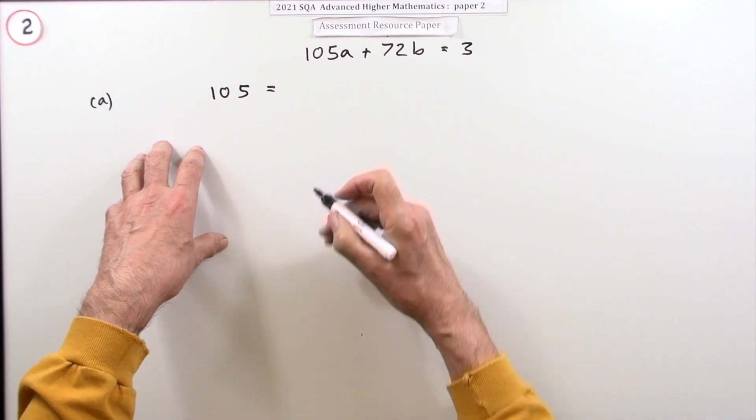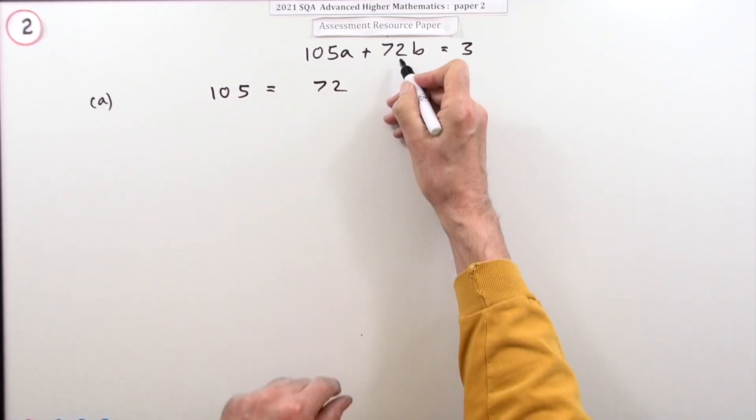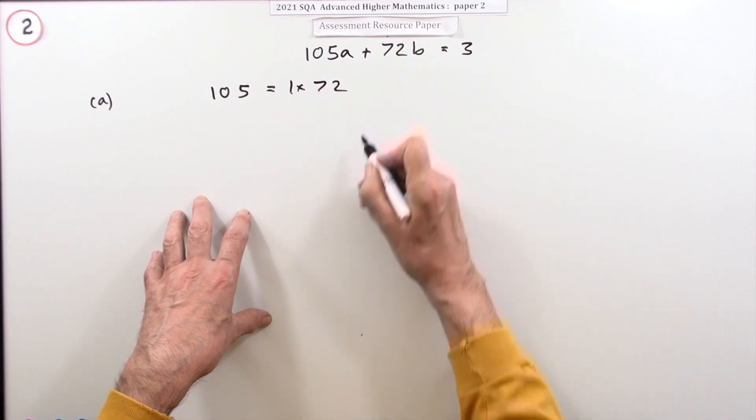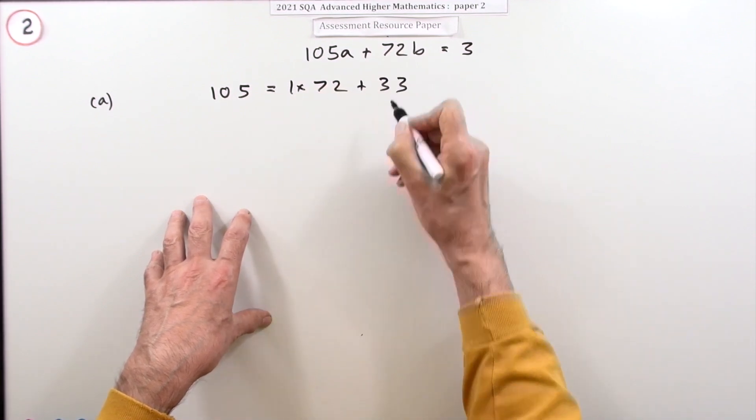The first step: does 72 go into 105? No, it doesn't. There's only one of them, and that's 33 left over.